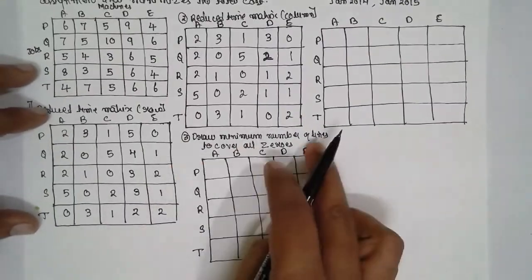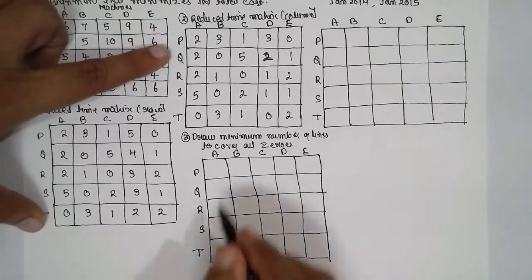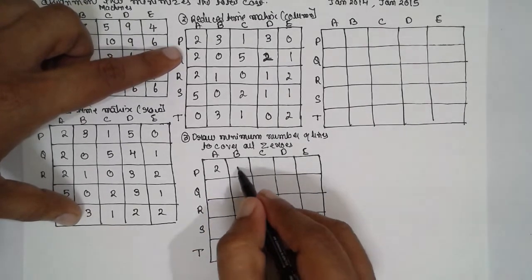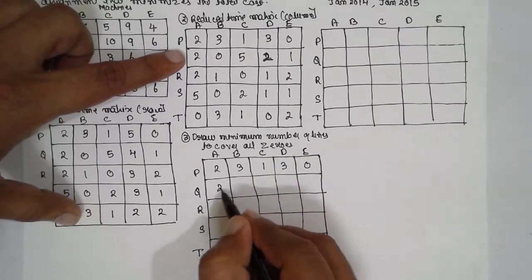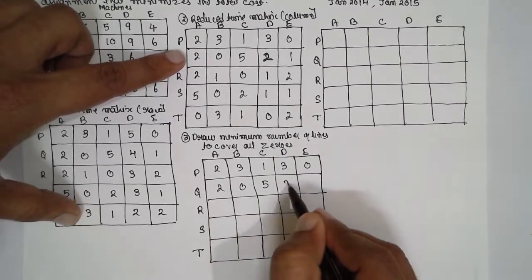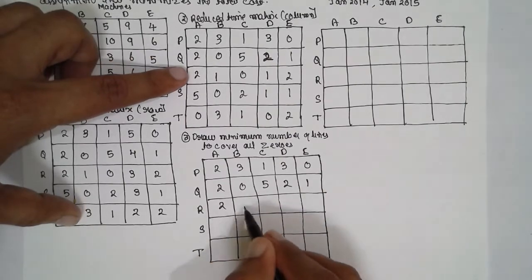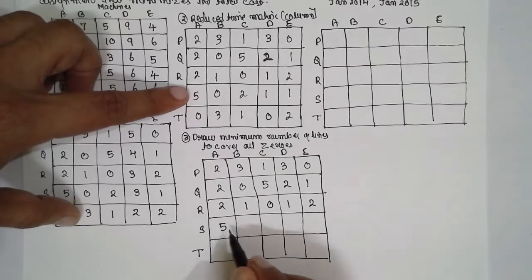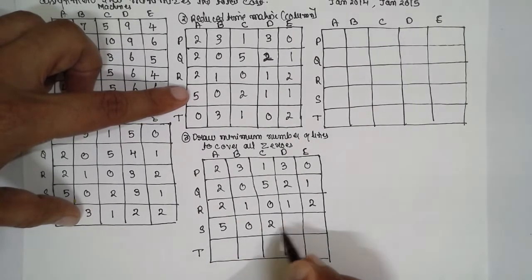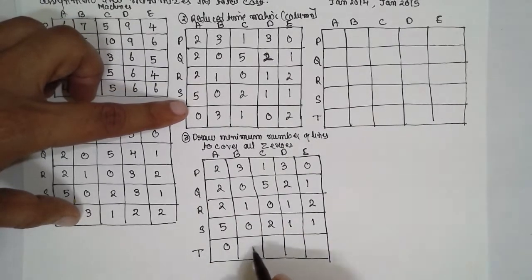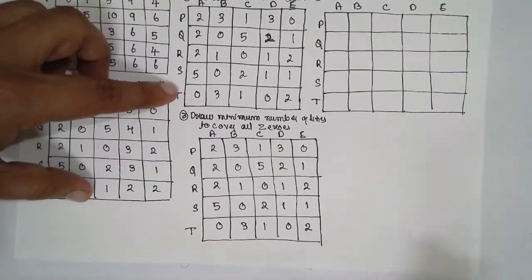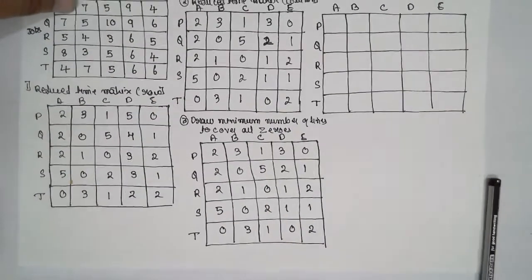Next, draw the minimum number of lines. Write this value as is here: 2, 2, 3, 1, 3, 0, 2, 0, 5, 2, 1, 2, 1, 2, 1, 2, 0, 3, 1, 0, 3, 1, 0, 2. Now draw the minimum number of lines here.